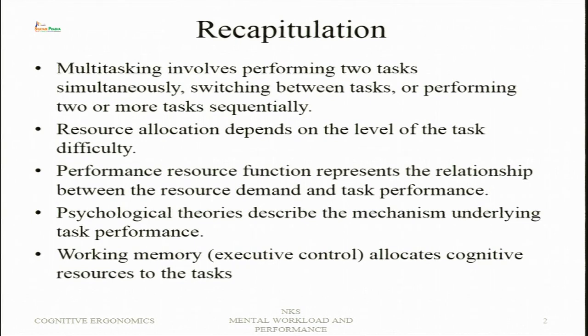Just to recapitulate what we have done in the previous sessions: we talked about multitasking, which involves performing two tasks simultaneously, switching between tasks, or performing those tasks sequentially one after the other. Resource allocation depends on the level of task difficulty, so if both tasks are resource-demanding, then performance can decline on both tasks or one of them depending upon which task is given more priority.